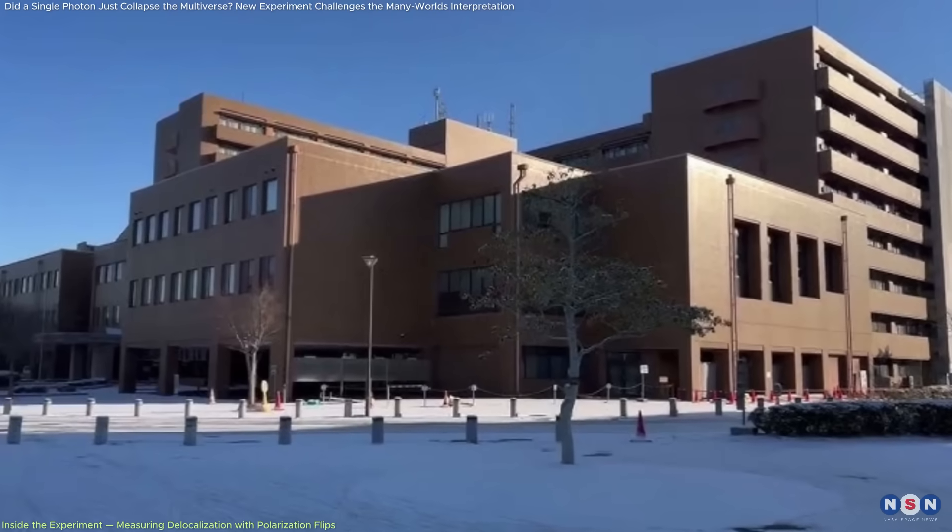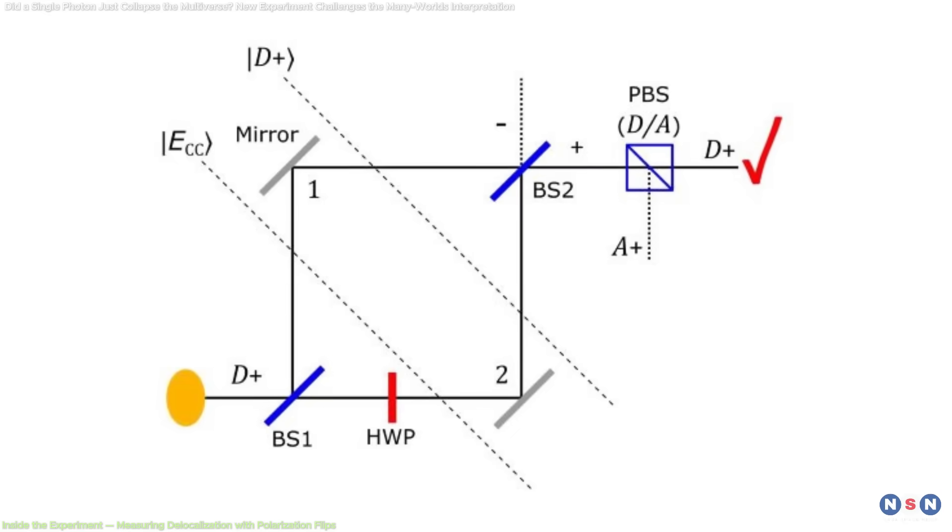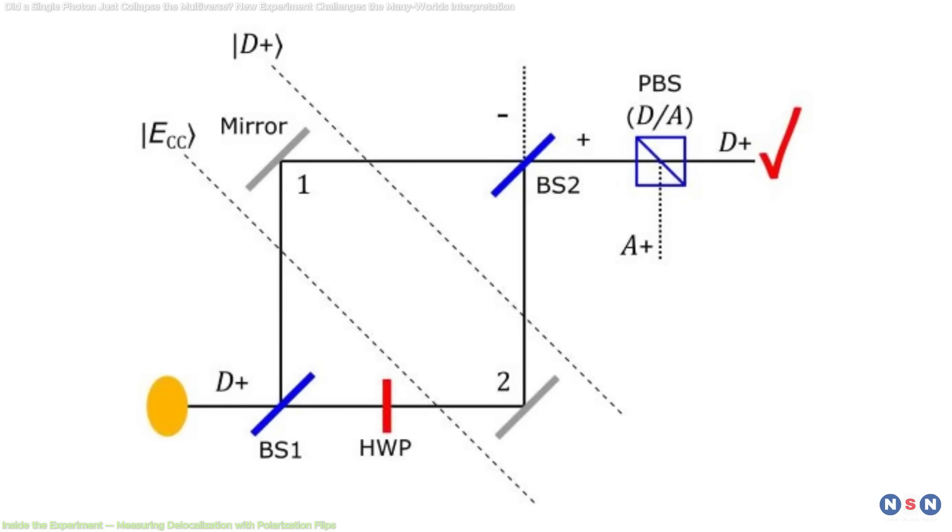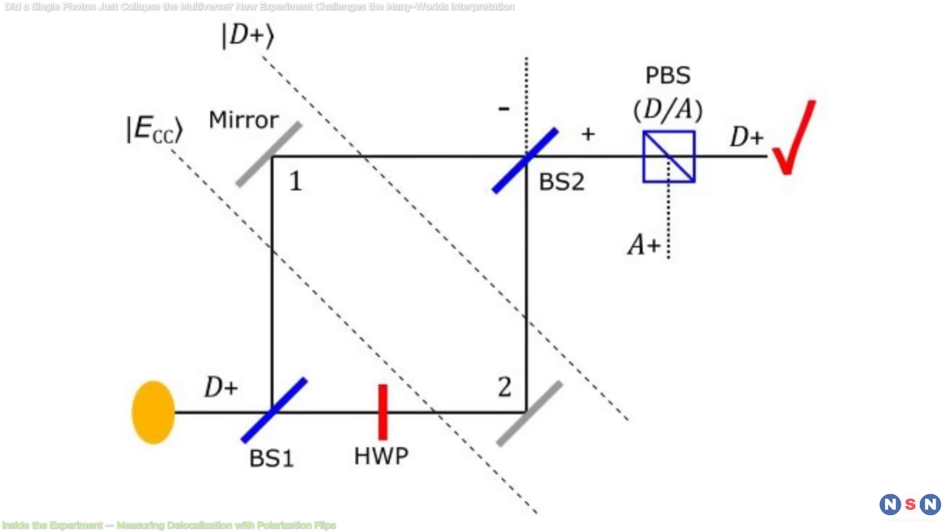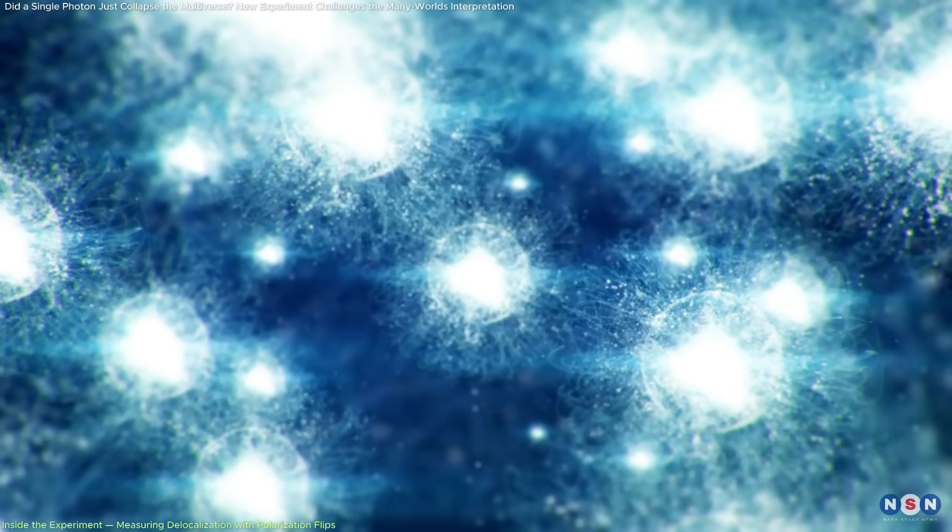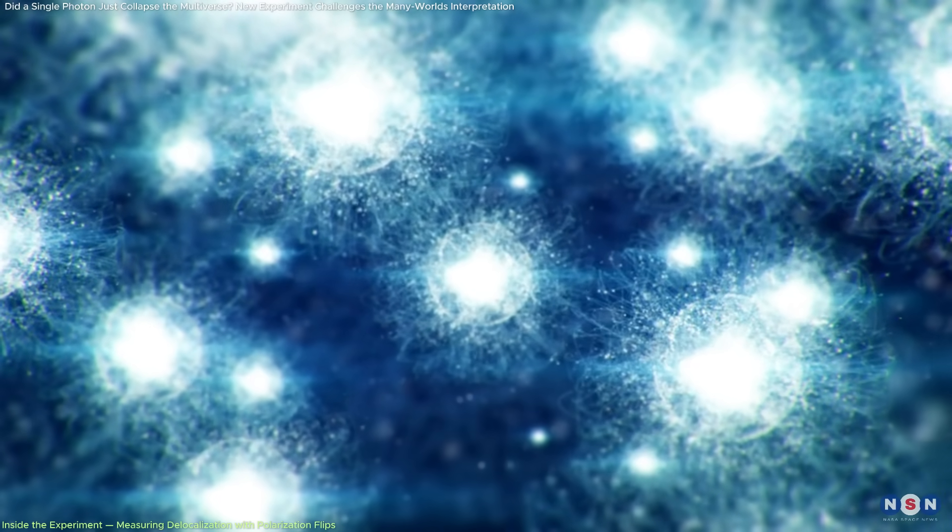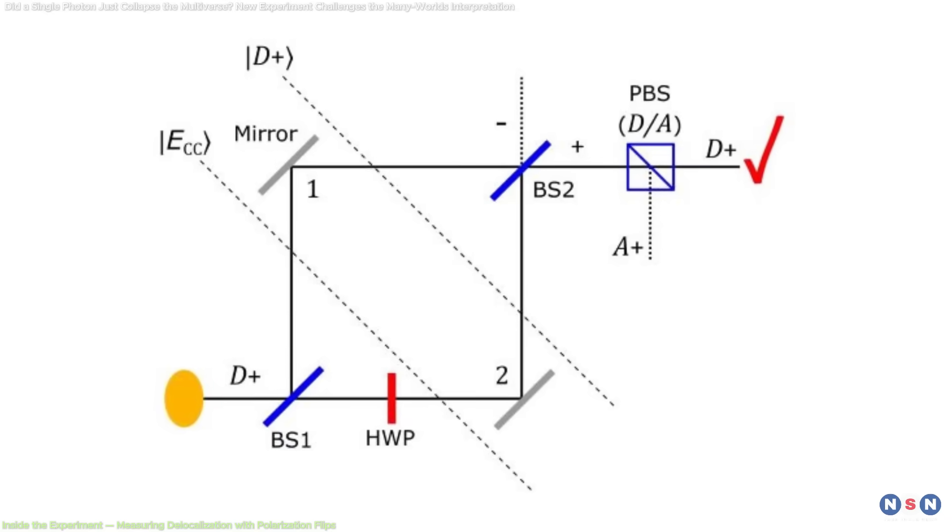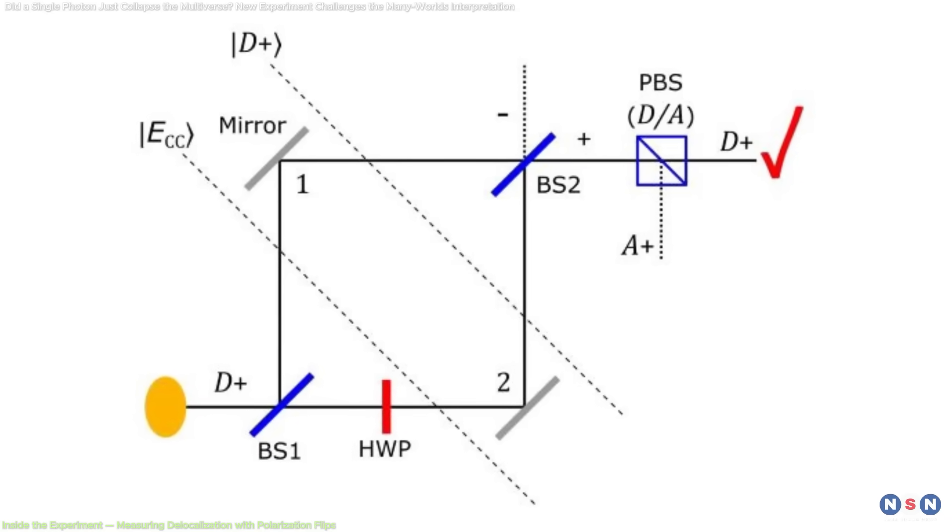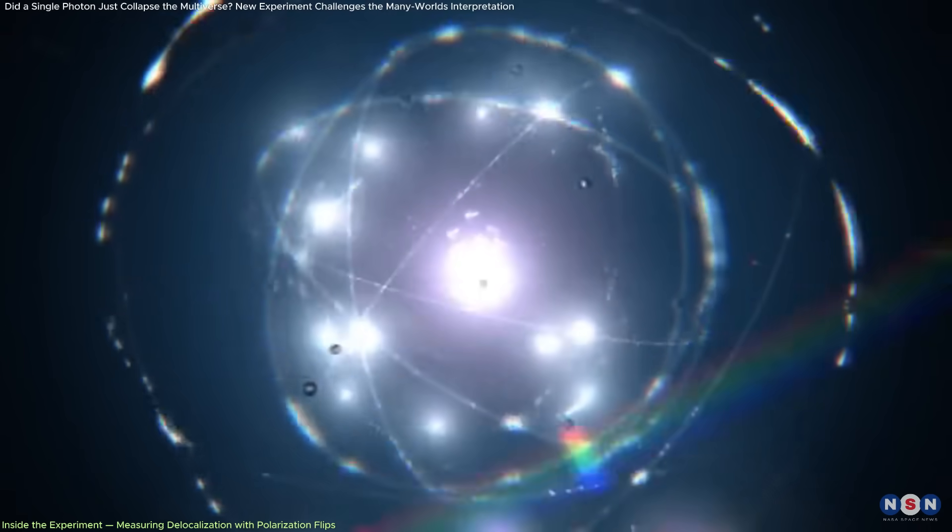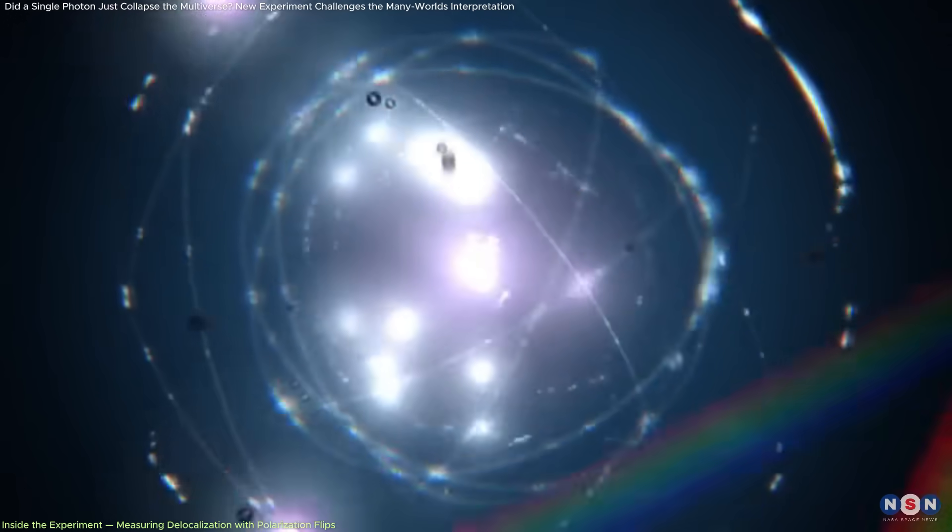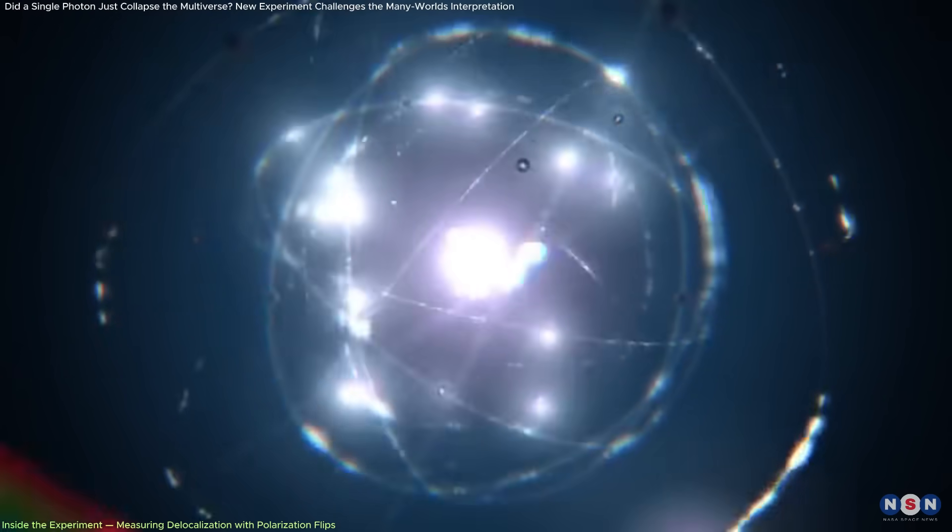The Hiroshima University team implemented a two-path interferometer and introduced a mechanism to track the photon's influence across both paths without collapsing its quantum state. Vertically polarized photons were directed through an interferometer with half-wave plates in each path. These HWPs rotated the polarization slightly, but in opposite directions. This setup ensured that any measurable polarization flip would depend on how the photon's presence was distributed between the two paths.